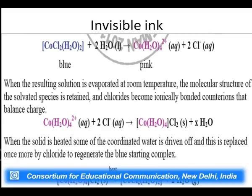Coordination compounds are a type of addition compounds. Addition compounds are those compounds formed when solutions of two or more stable salts are mixed in stoichiometric quantities, the solution is allowed to evaporate and crystallize, and new crystals of some addition compounds or molecular compounds are formed. These addition compounds are of two types: double salts or lattice compounds, and coordination compounds.